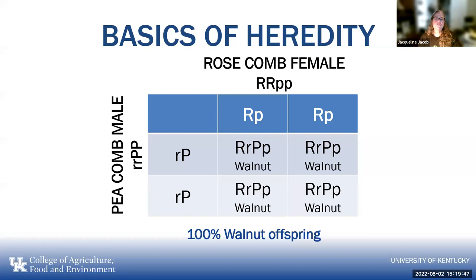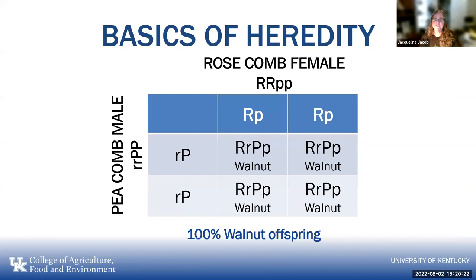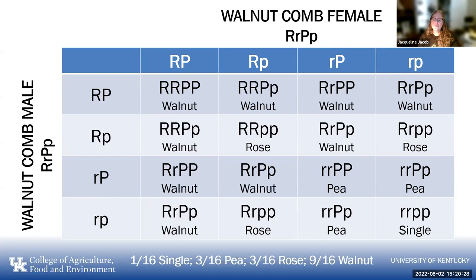If you cross a rose comb female with a pea comb male, 100% of offspring are walnut comb — assuming your rose comb is homozygous dominant R and your pea comb is homozygous dominant P. If it has one of each, that's not what happens. If you cross a walnut female with a walnut male where both are heterozygous, you end up with 1/16 single comb, 3/16 pea comb, 3/16 rose comb, and 9/16 walnut comb — showing interaction between different genes.